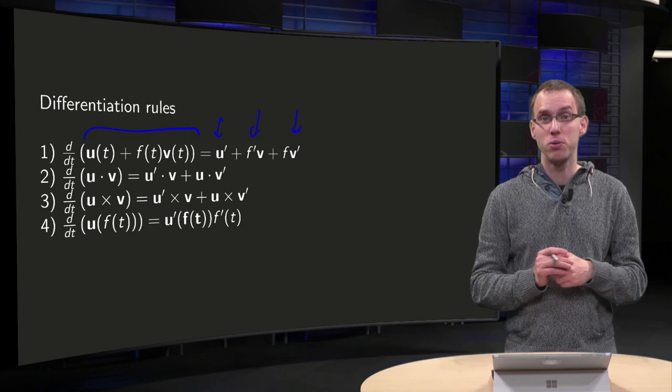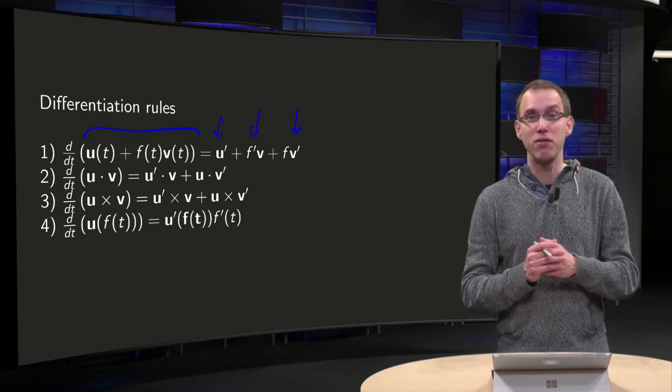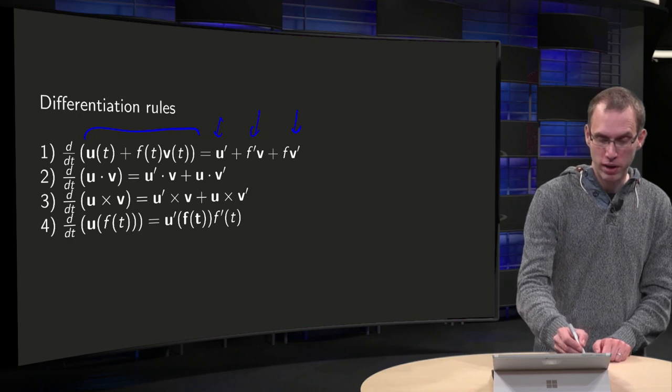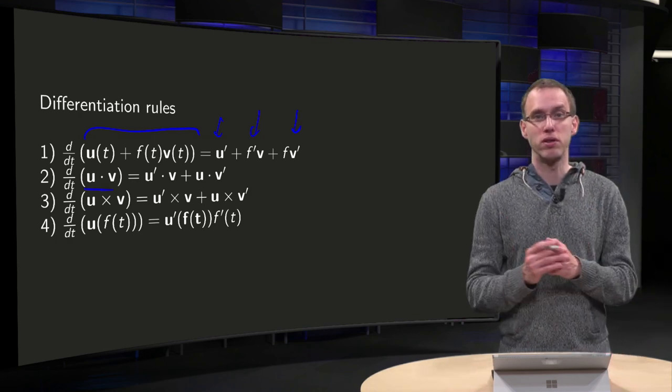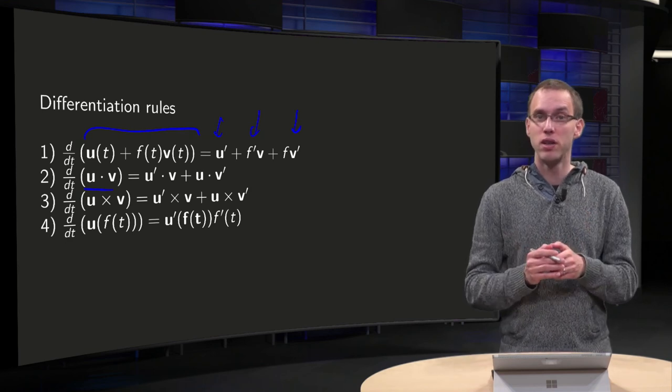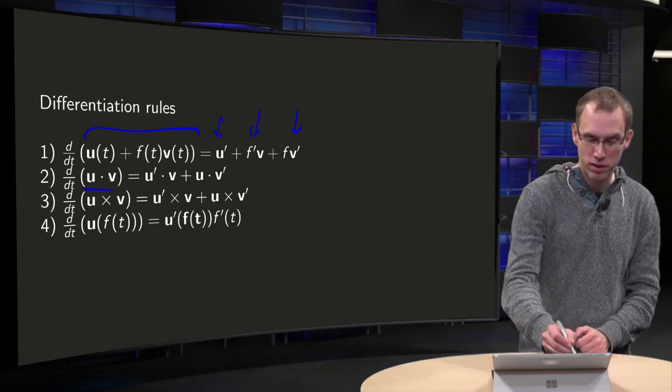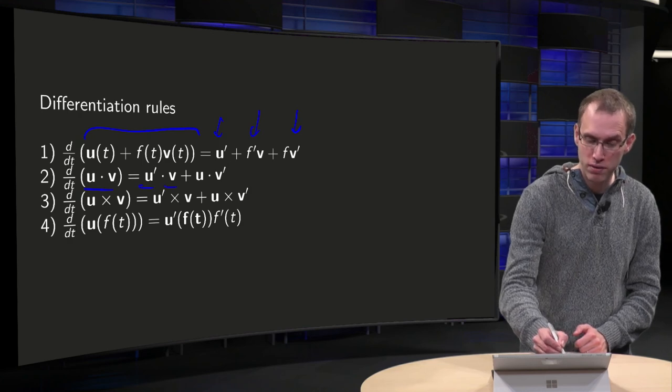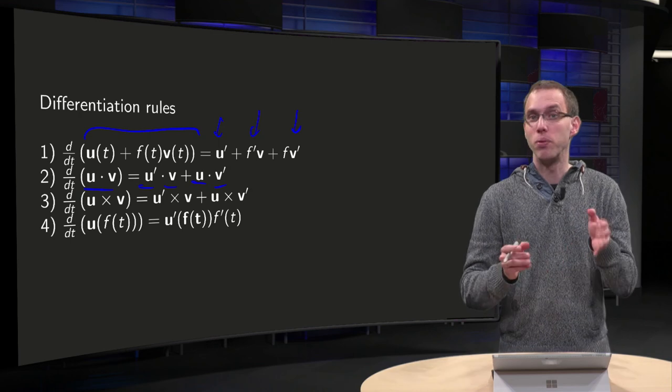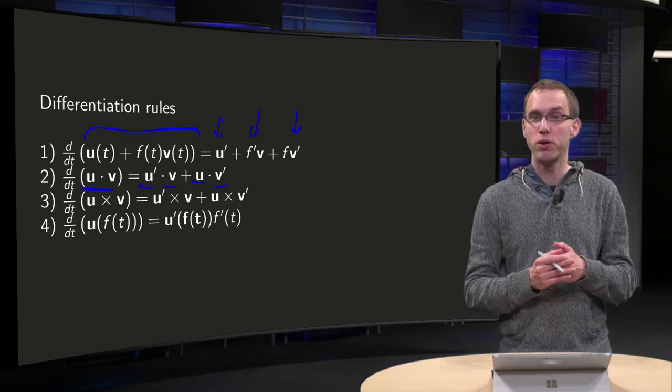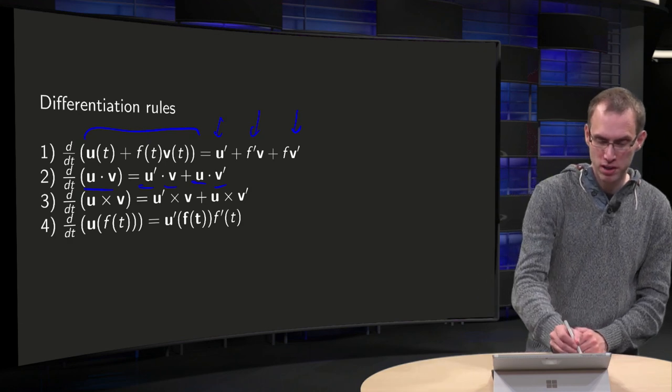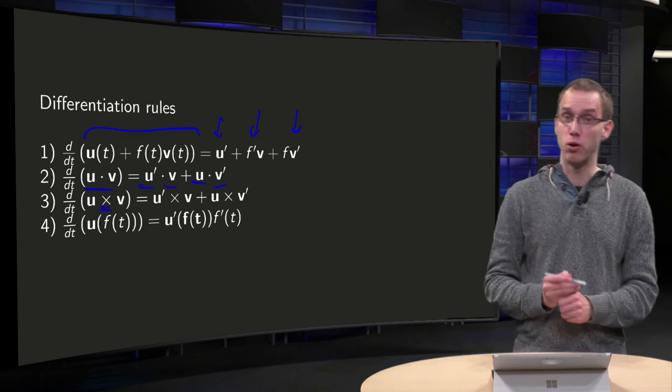What about product rules? Well, you have to be a bit careful, because what do we mean with the product? We can take, for example, the inner product. So the d/dt of the dot product. How do we compute that? Well, we differentiate the first one dot the second one, plus leave the first one and differentiate the second one. So we have indeed the same product rule, but you have to be careful because we have the dot product. And something similar if you use a cross product.